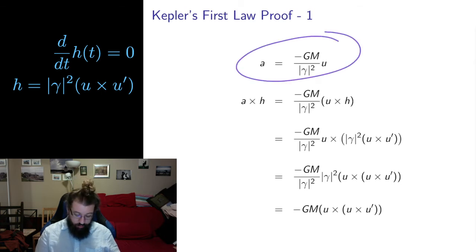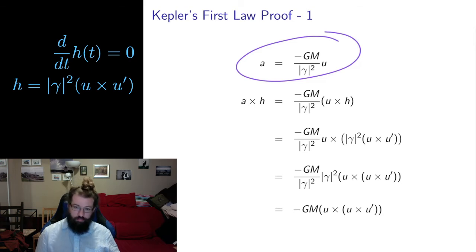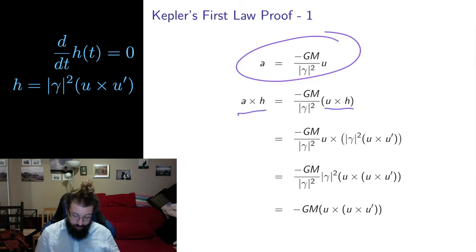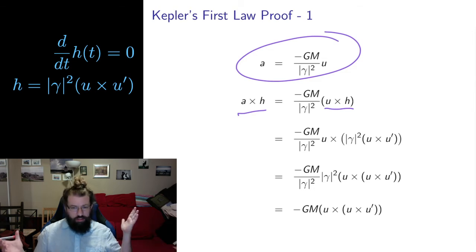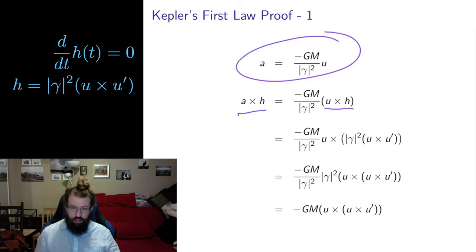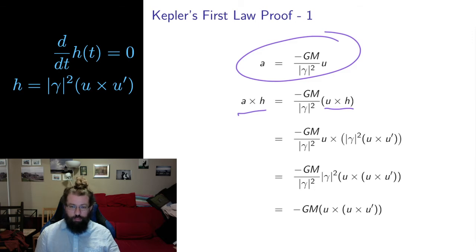Let me work with this equation to get it in a slightly nicer form, because as it stands I can't solve it directly. I'm going to take the cross product of both sides with the vector H. Why? Geometrically it's a bit tricky to see — essentially I found out it worked. It gave me a simplification of the differential equation. I'm just playing around, trying things to see if I can get somewhere.